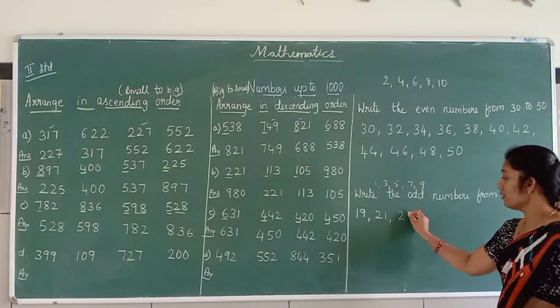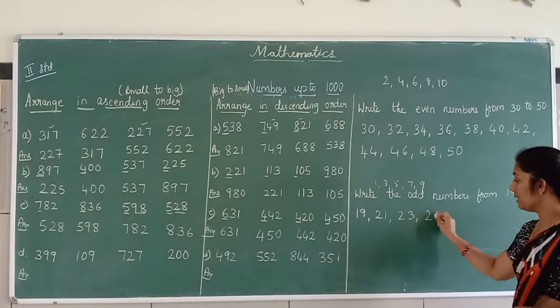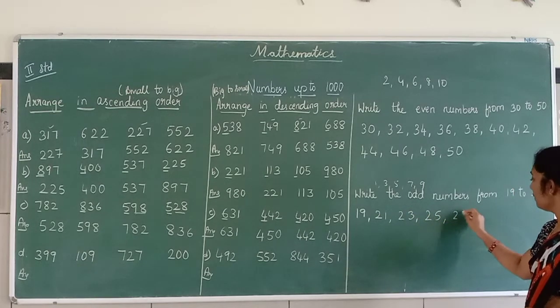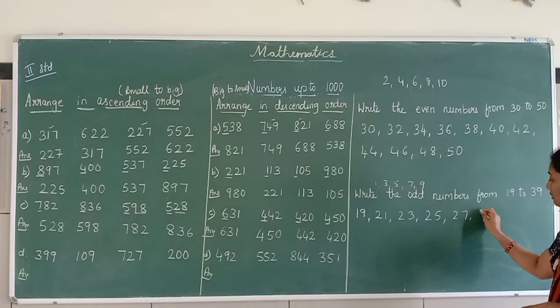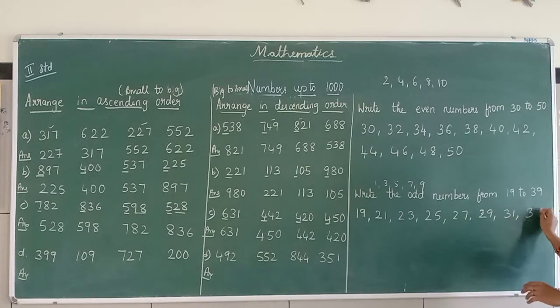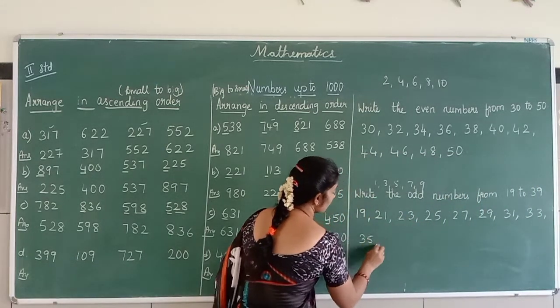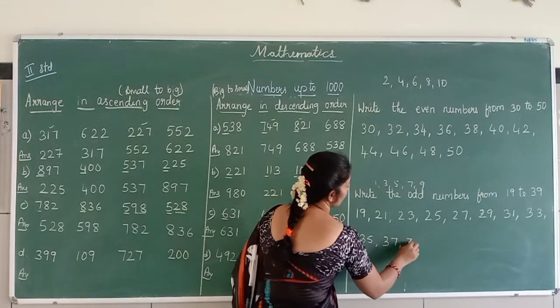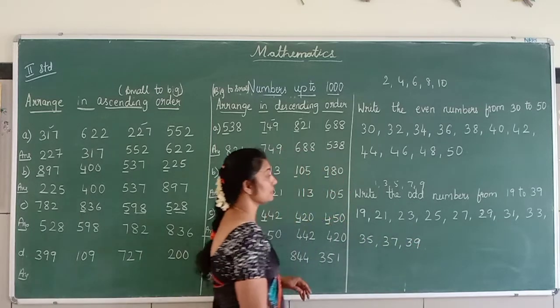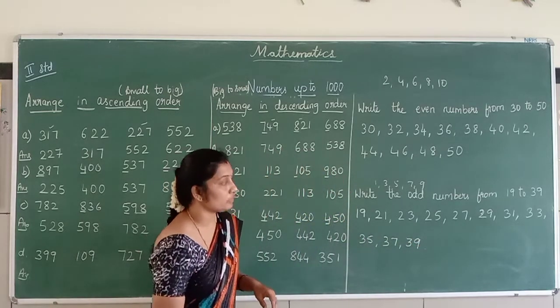So 21, after 23, 23 after 25, 27, 29, 31, 33, 35, 37, and 39. So this is the odd number from 19 to 39.